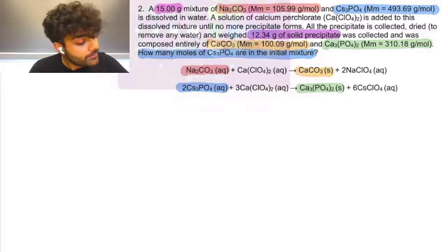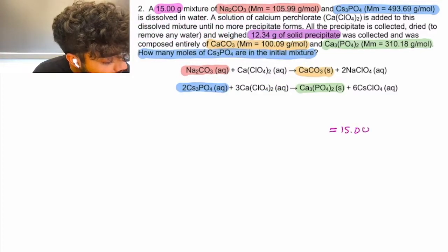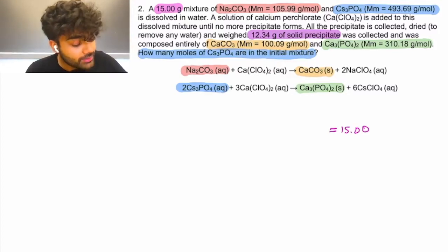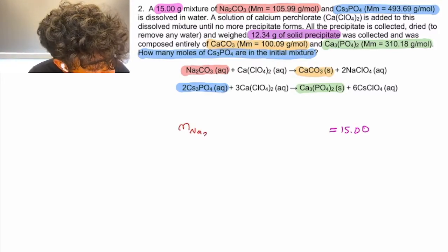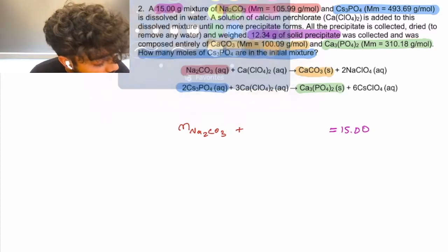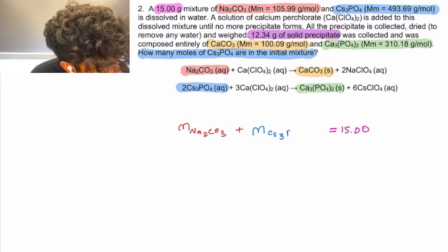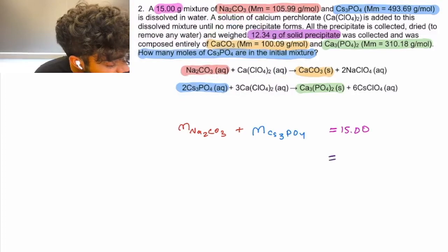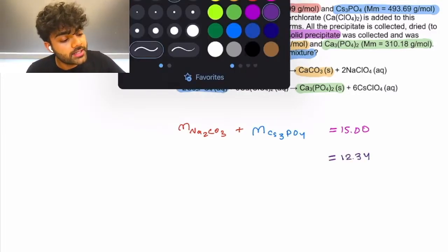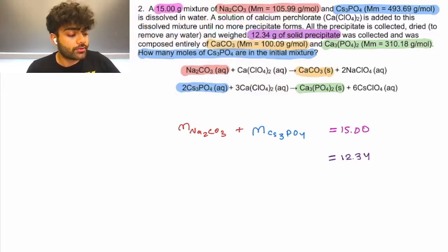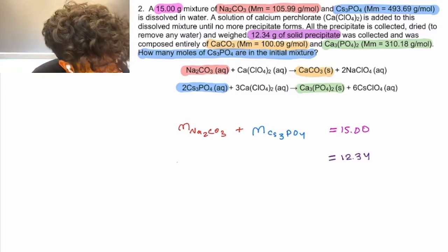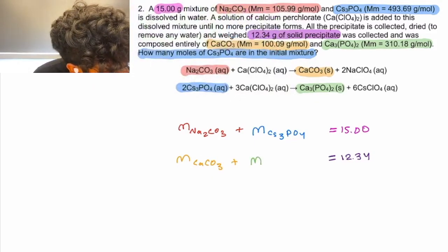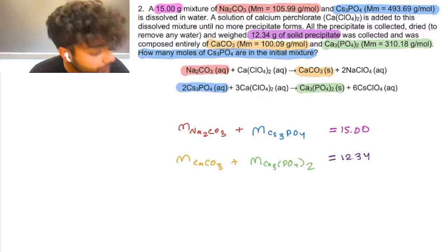We know that we have a 15.00 gram initial mixture, and we know that that's comprised of Na2CO3 and CS3PO4. So, we know that the entire 15 grams comes from the mass of Na2CO3 plus the mass of CS3PO4, and that gives us our 15 gram mixture. Now, we know that we have a second mixture that's our product mixture, which is 12.34 grams of solid precipitate. That's entirely made up of CaCO3 and Ca3PO4. So, we know that that is going to be the mass of CaCO3 plus the mass of Ca3PO4.